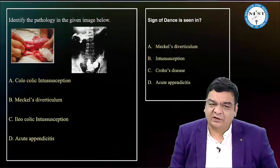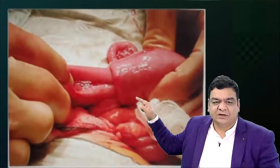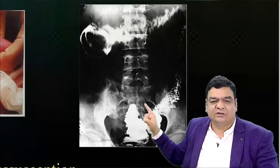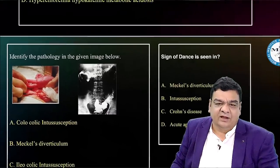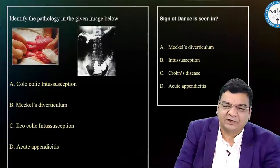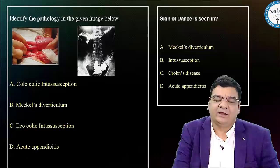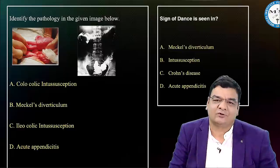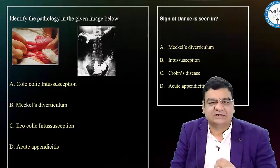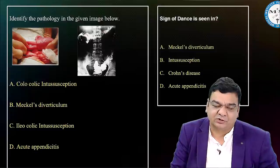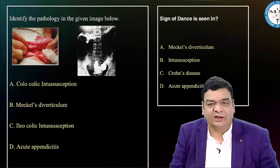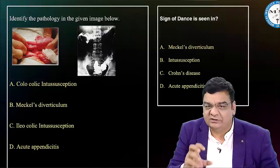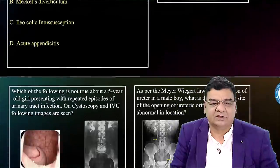Another hot topic: image-based questions on intussusception. They may show a tubular appendix-like image — that is ileocolic intussusception. Recent focus has been on the claw sign seen in intussusception. Important signs: sausage lump in right hypochondrium, empty right iliac fossa (Dance's sign), red currant jelly stools, examiner's fingers stained with blood, ultrasound donut sign, barium enema claw sign and coil spring sign. Best investigation: CECT. Treatment: air enema reduction or saline/barium. Operative reduction if hydrostatic reduction fails — gently push, not pull.